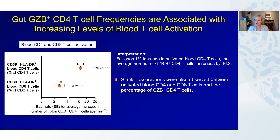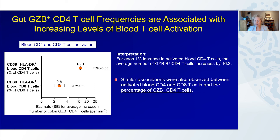The analysis revealed associations between gut granzyme B-expressing CD4 T cell frequencies and blood CD4 and CD8 T cell activation based on CD38/HLA-DR co-expression. The estimate was greater for CD4 T cell activation than CD8 T cell activation. For each 1% increase in activated blood CD4 T cells, the average number of granzyme B-expressing cells per tissue area increased by 16. These were significant even using the false discovery rate correction, and were consistent whether we looked at cells as a percent of CD4 or as cells per tissue area.